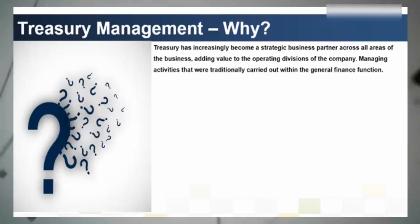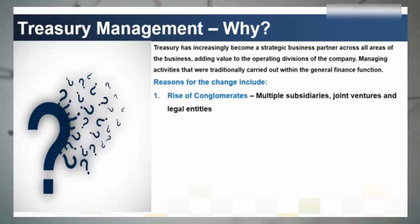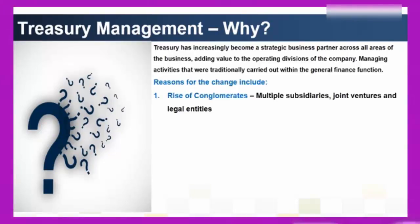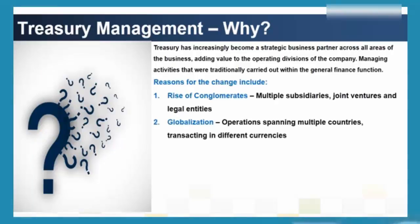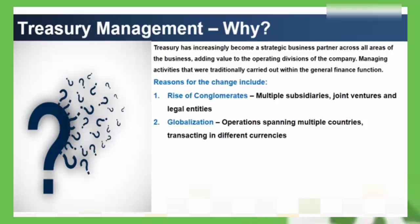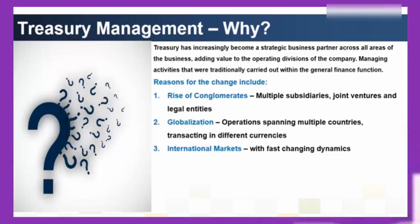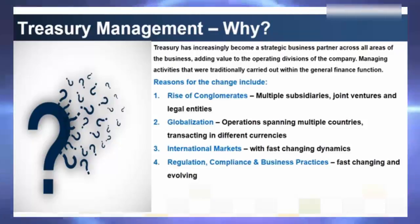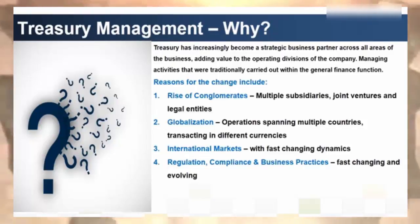Some of the reasons for this change are: the rise of conglomerates, which have complex operating structures with multiple subsidiaries, cross-border joint ventures and many legal entities that make having an enterprise view a mammoth task. Globalization means these conglomerates span multiple countries and are exposed to many types of financial and currency risks. International markets are highly competitive and dynamics change very fast. Regulations are changing rapidly and compliance requirements are becoming more stringent over time.